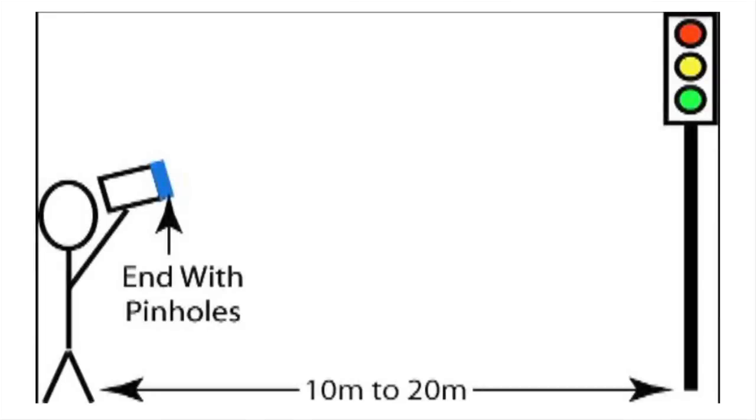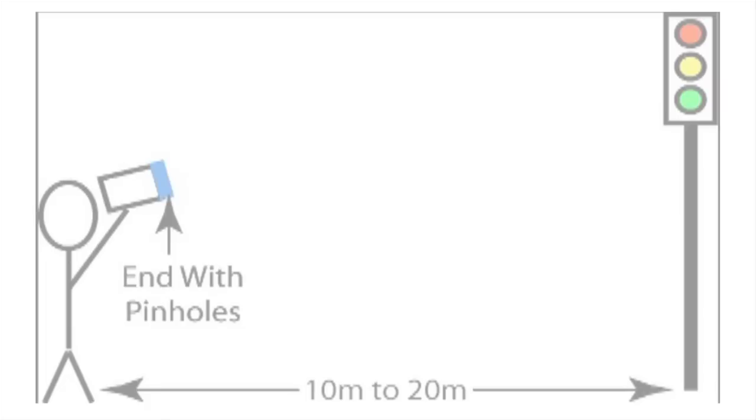To use the system, stand somewhere safe, hold the open end of the tube close to one eye, and look at a streetlight or stoplight at least 10 to 20 meters away. This is a picture I took of a car at a stoplight using the double pinhole system pictured earlier. Notice the strong dark bands in the stoplights and car headlights. The pattern is even more impressive in person.